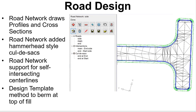In Road Network, you can now draw profiles or draw cross sections from a selected road. There's also a new hammerhead style cul-de-sac as shown here. Road Network now supports self-intersecting roads, such as a road that makes a pie shape.